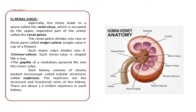Inner to the medulla is the renal sinus. Internally the hilum leads to the space called the renal sinus, which occupies the upper expanded part of the ureter called the renal pelvis. The renal pelvis divides into two or three major calyces. Each major calyx divides into six to twenty minor calyces, each minor calyx being cup-shaped. The papillae of the medullary pyramids fit into the minor calyces. Each kidney consists of closely packed microscopic coiled structures called nephrons — the structural and functional unit of the kidney — with about 1.2 million nephrons in each kidney.